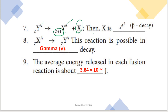Next question: the parent element is ZXA and the daughter element is ZYA — meaning both the atomic number Z and the mass number A remain unchanged. This is possible in gamma decay, where neither the atomic number nor the mass number changes.